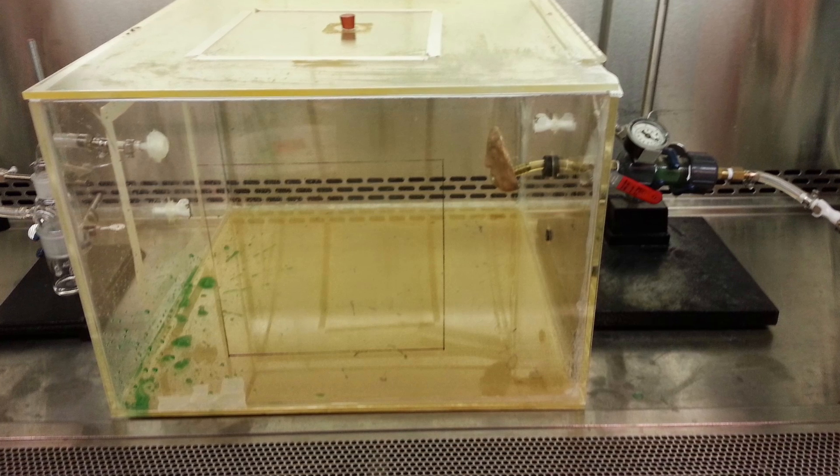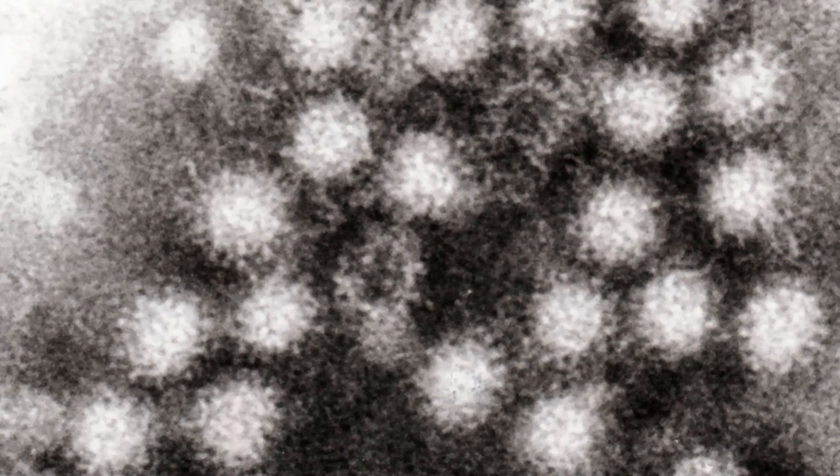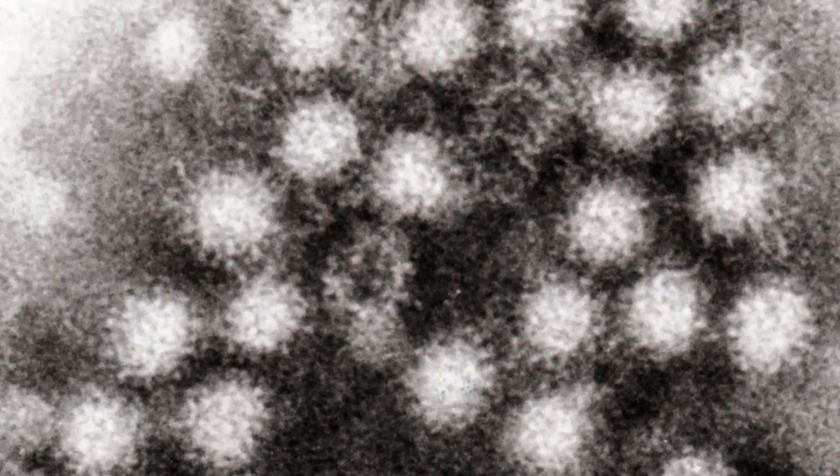The numbers were pretty small, but in the case of norovirus, which these scientists were modeling, as few as 20 particles can cause infection. And when these viruses get into their next victim, the cycle of splatter starts all over again.